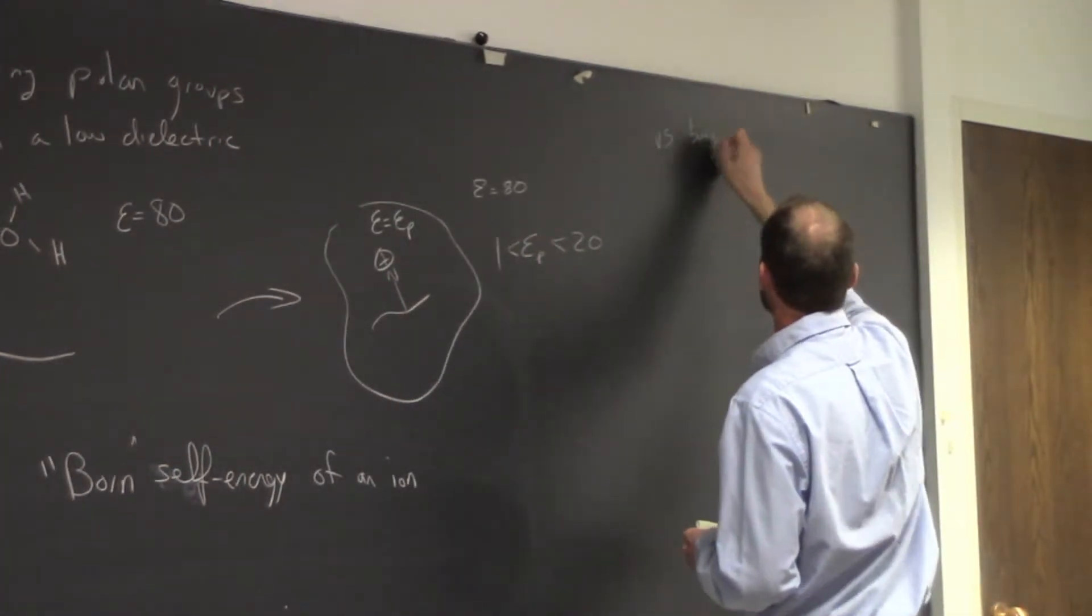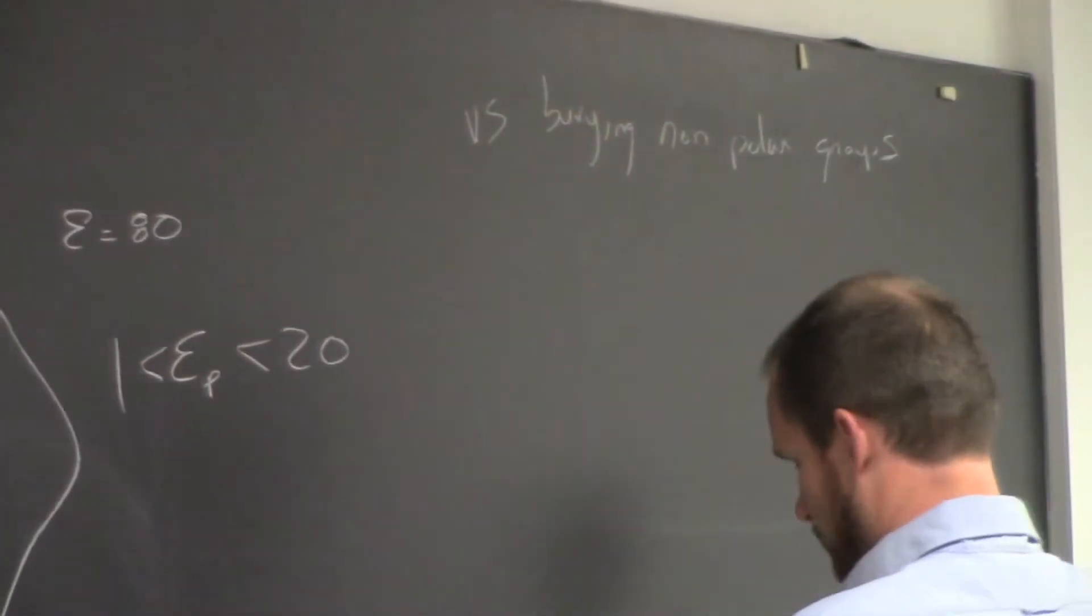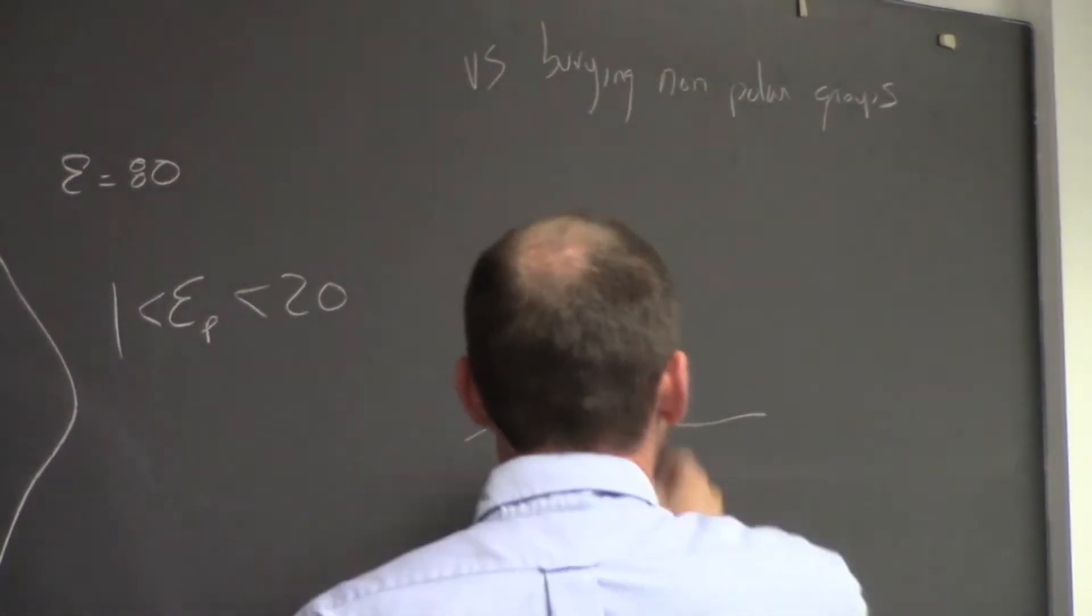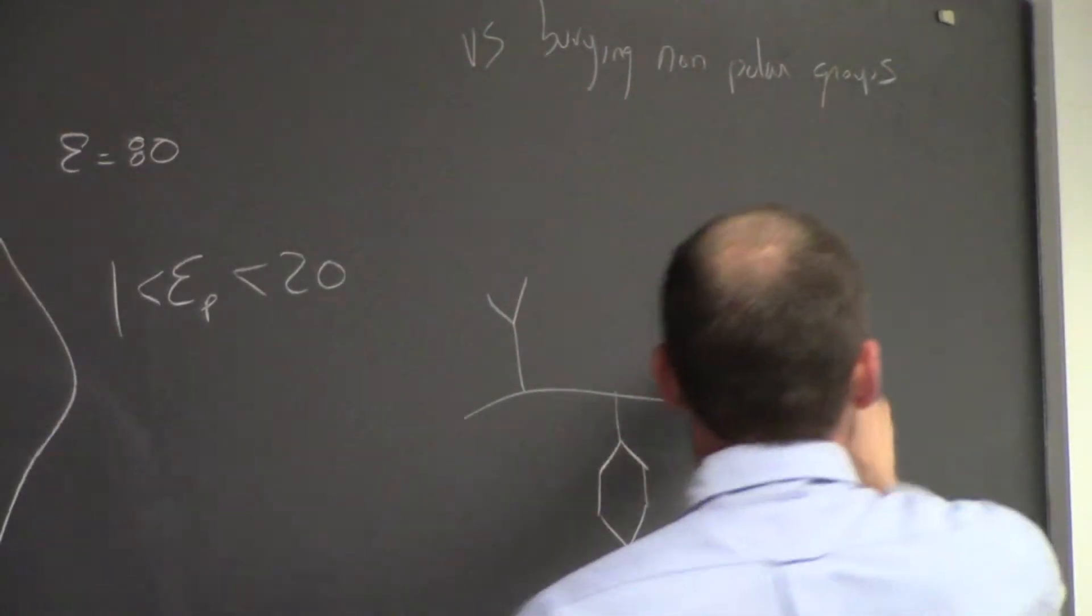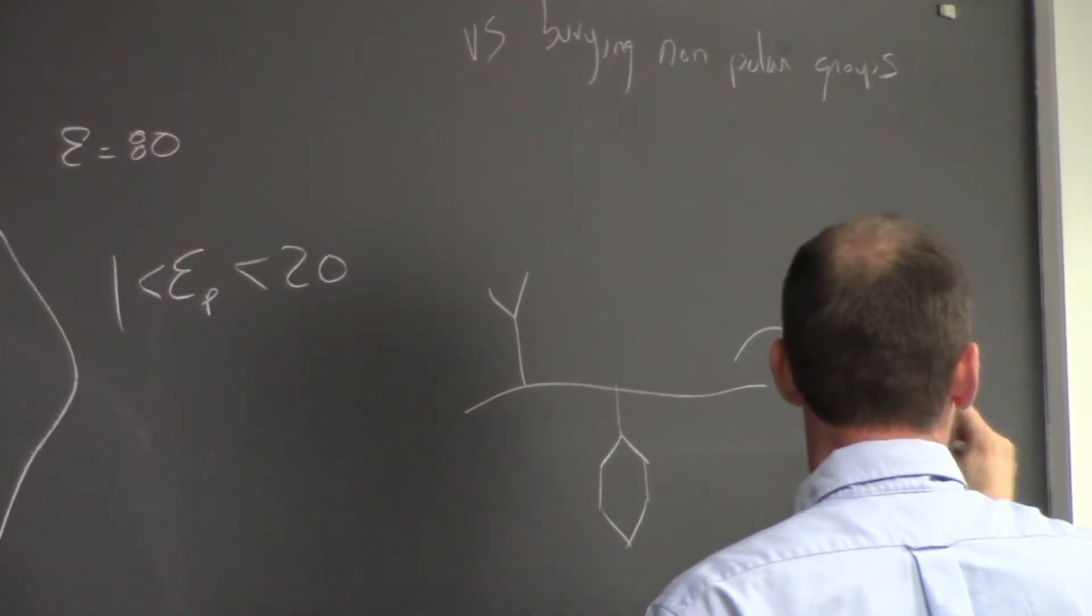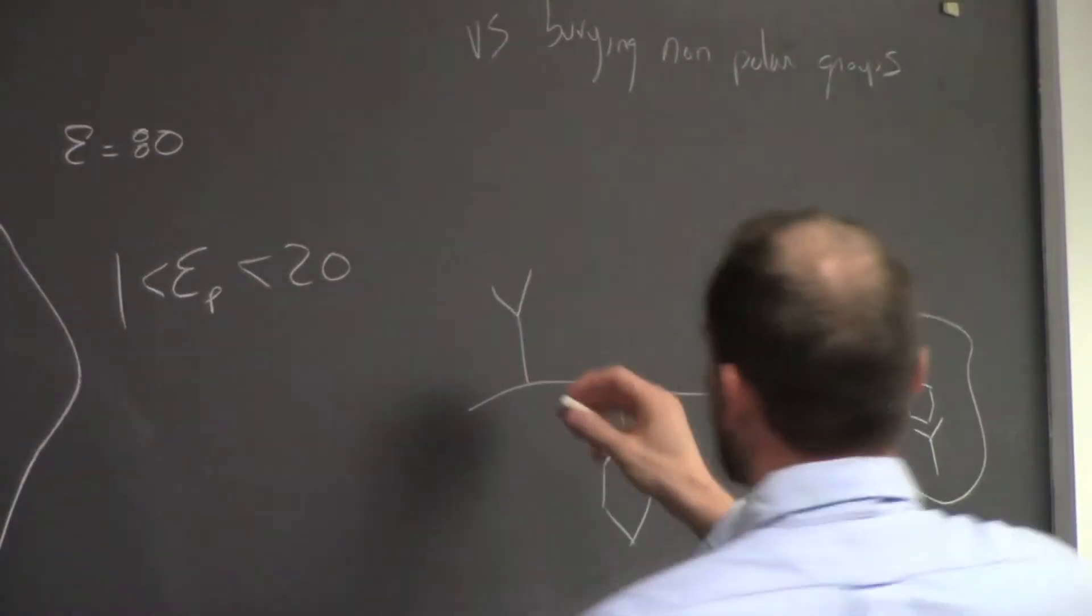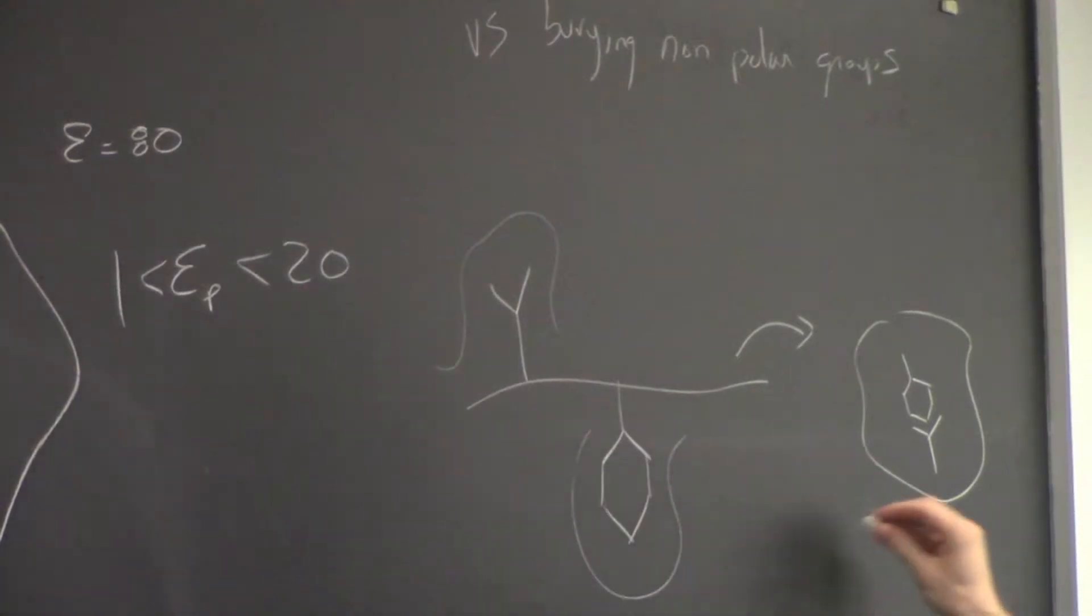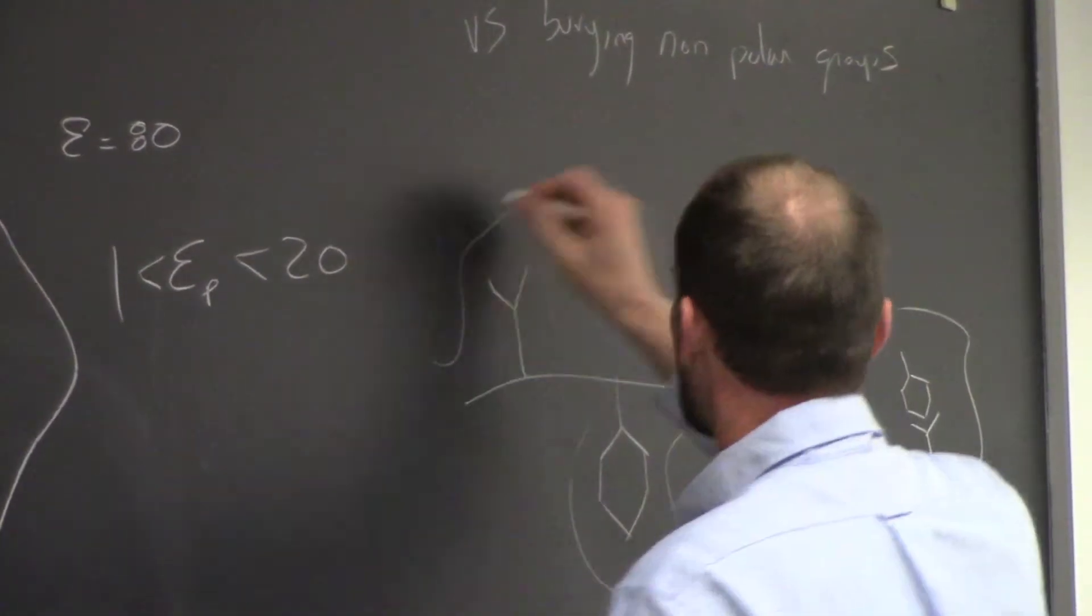And last, so this is for burying polar groups. We can compare that with burying non-polar groups. If we have an unfolded state and say a valine and we have waters around there and we have a phenylalanine, and then we take that unfolded state and fold it into a protein and now we bury these hydrophobics and the hydrophobics are in the middle and the shapes are complementary.